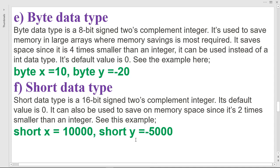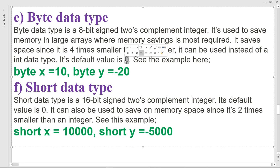The byte data type is an 8-bit two's complement. It saves memory in large arrays where memory saving is most important. It is four times smaller than an integer. So byte is used for small numbers and can be used instead of int when the values are small enough.